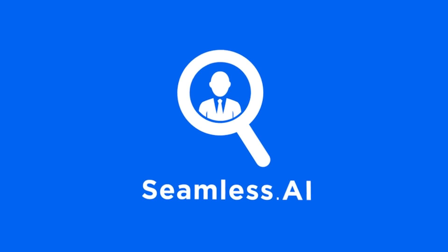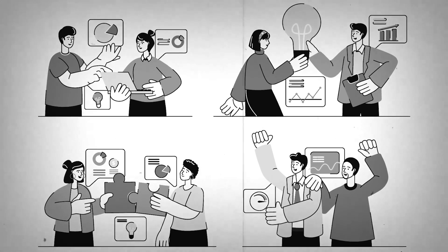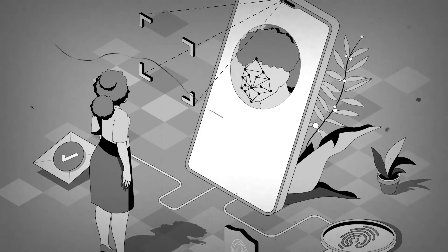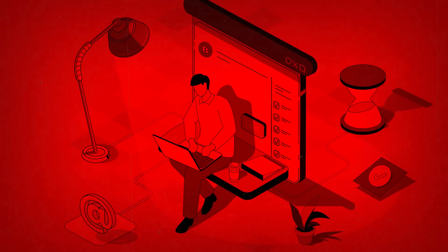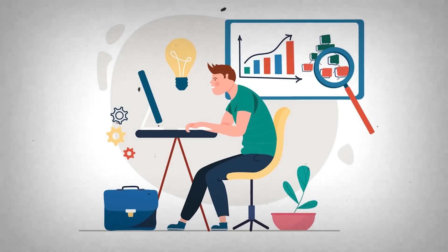Another one is Seamless.ai. On Seamless, data accuracy is a huge problem — there's no verification, so bounce rates become a problem. You might download 100 leads and 60 of them might bounce, which puts your domain at risk or requires another tool to do the verification. Seamless also comes with a daily search limit.